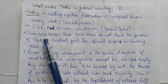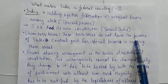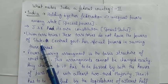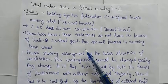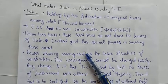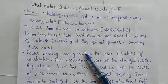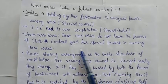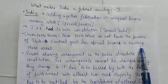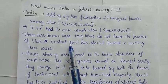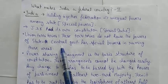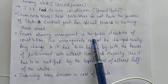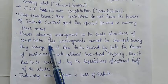Union Territories ke liye — inhe state government wali powers nahi di gayi hain. Jaise Delhi mein CM Arvind Kejriwal ke paas police ka control nahi hai — jo powers ek normal state ke paas hoti hain, woh Union Territory ko nahi milti. Central government ke paas in Union Territory areas ko chalane ki special powers hoti hain.